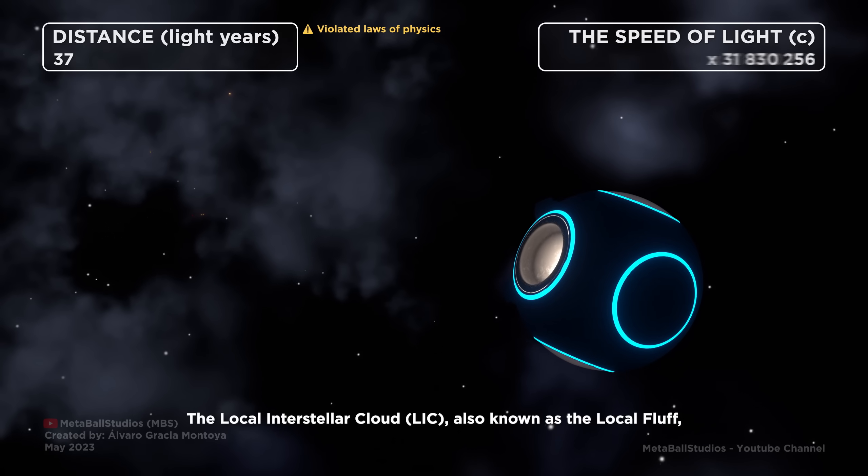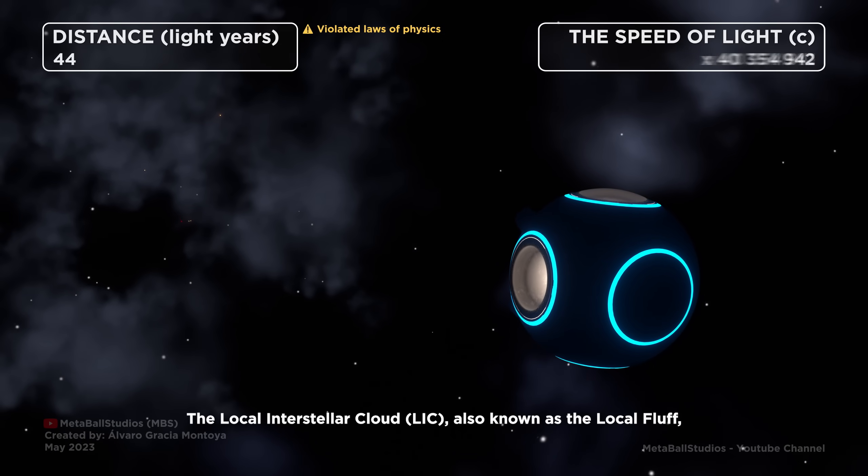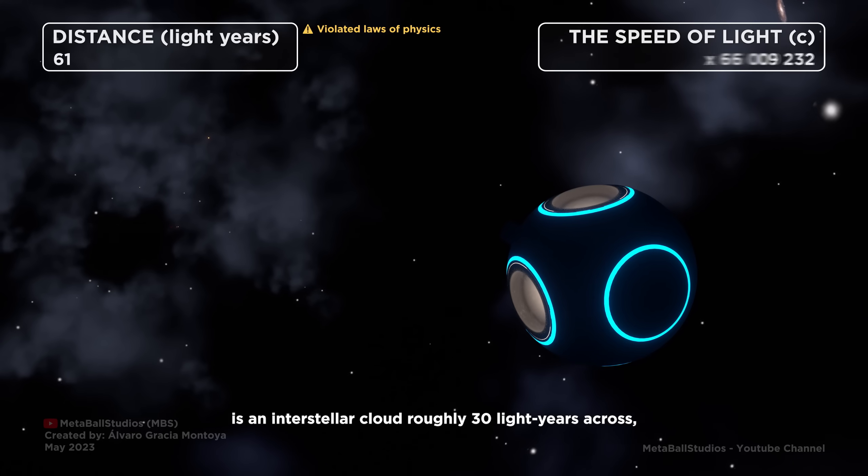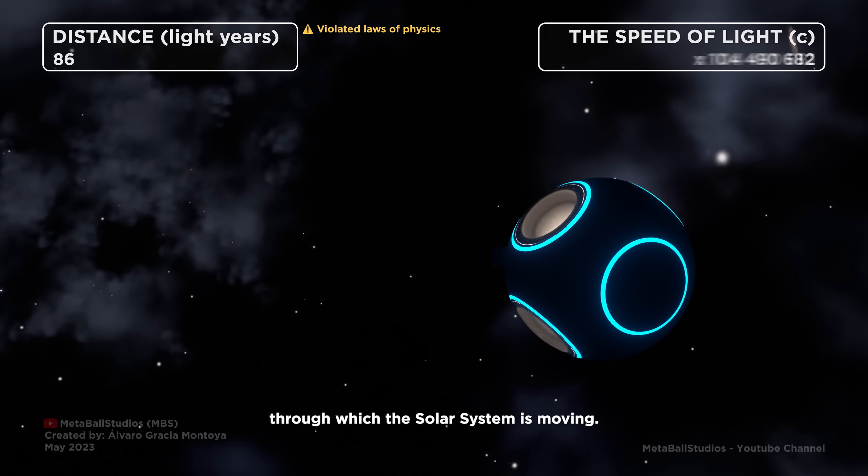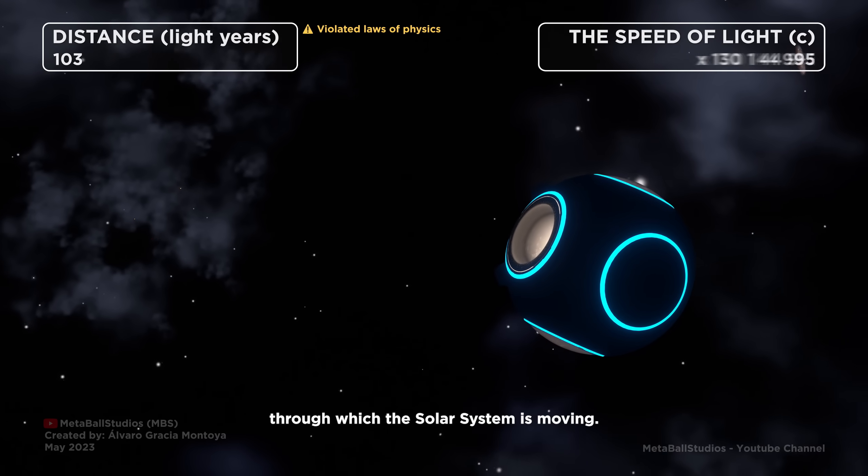The Local Interstellar Cloud, also known as the Local Fluff, is an interstellar cloud roughly 30 light years across, through which the solar system is moving.